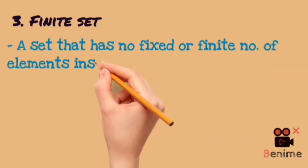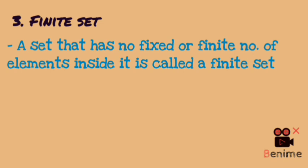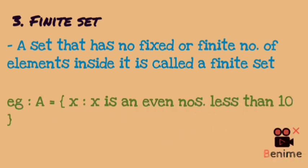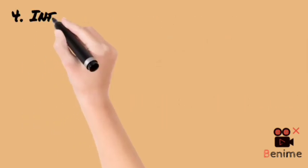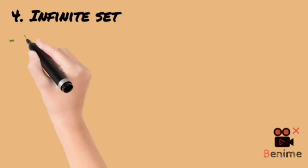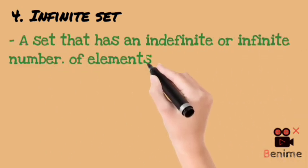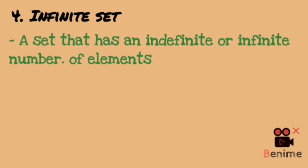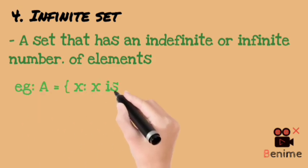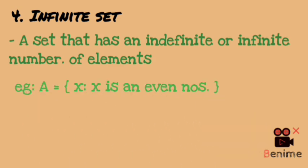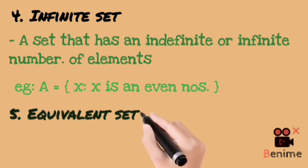Third, we have a finite set. A finite set is one where the total number of elements is defined. For example, x is an even number less than 10 — that gives {2, 4, 6, 8}, which is a finite set. In contrast, if A = {x | x is an even number} with no upper bound, then {2, 4, 6, 8, 10, ...} is an infinite set.